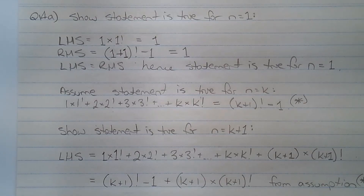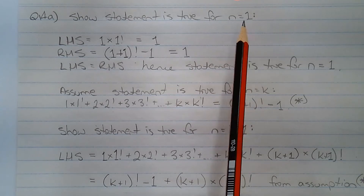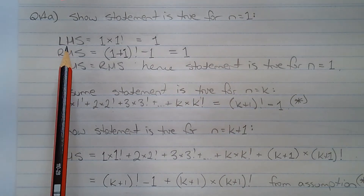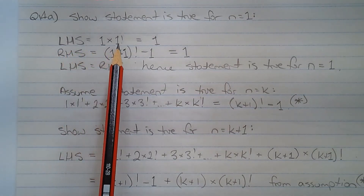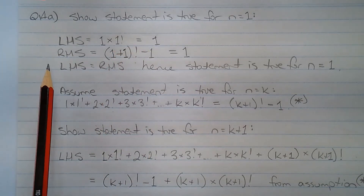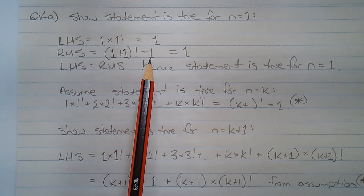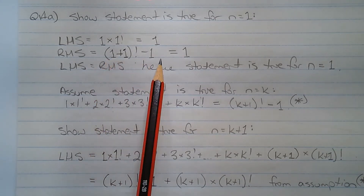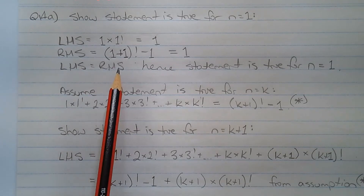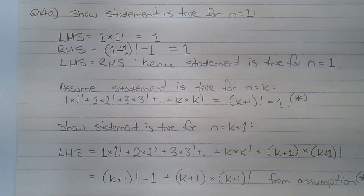The first step is to show the statement is true for some value of n, and we can choose n equals 1. The left-hand side of the statement is equal to 1 multiplied by 1 factorial, which equals 1, and the right-hand side is equal to 1 plus 1 factorial minus 1, that's 2 factorial minus 1, which equals 1. The left-hand side equals the right-hand side, hence the statement is true for n equals 1.